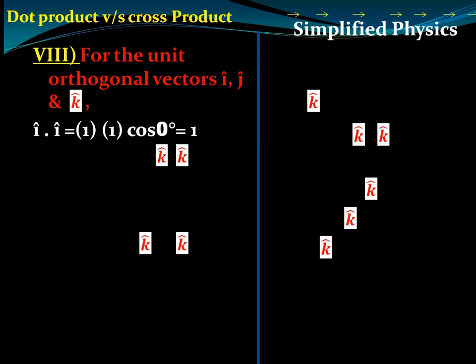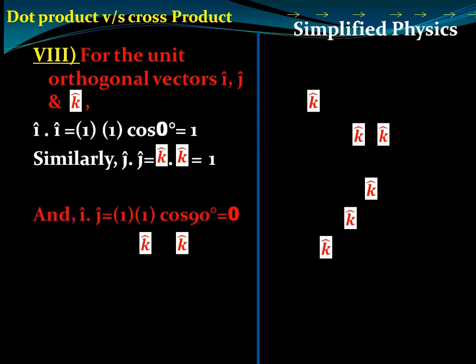For orthogonal unit vectors i, j, k: i acts along the x-axis, j along the y-axis, and k along the z-axis. Since i·i = 1·1·cos0° = 1, we have î·î = 1, ĵ·ĵ = 1, and k̂·k̂ = 1. Since i and j are perpendicular (90°), î·ĵ = 0. Similarly, ĵ·k̂ = 0 and k̂·î = 0.